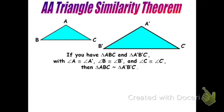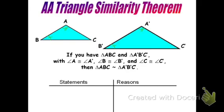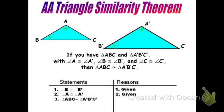So imagine this was a test question and I wanted to prove that the triangles are similar, and I was given the following information: angles B and B' are congruent, and angles A and A' are congruent. Can I prove these triangles are similar? Here's where I would use the AA similarity theorem — I see two pairs of congruent corresponding angles. To lay out a proof: angle B and B' are congruent, given; angles A and A' are congruent, given. Because I have two pairs of congruent corresponding angles, triangle ABC is similar to triangle A'B'C'. Make sure you write those in corresponding order. The reason is AA similarity theorem.